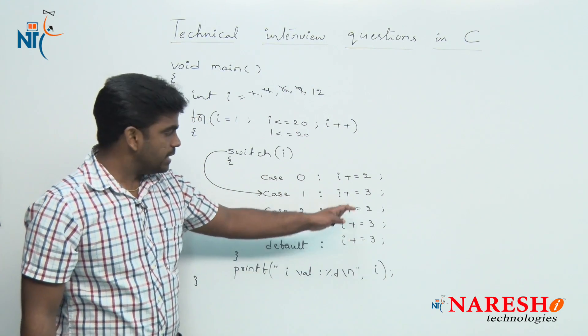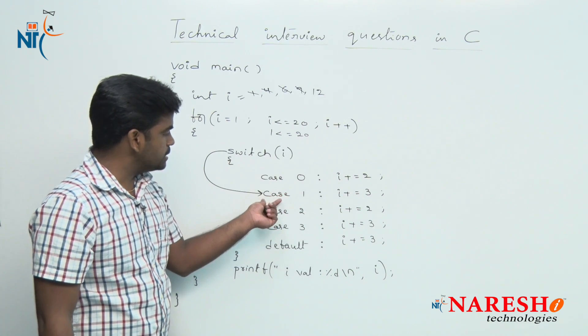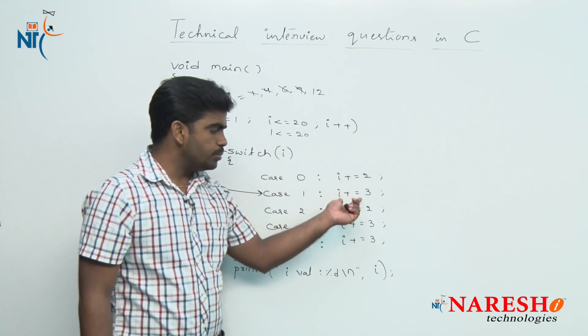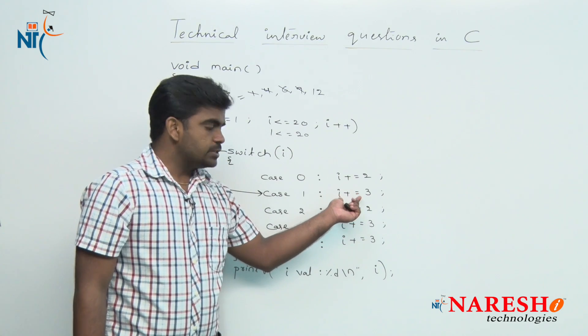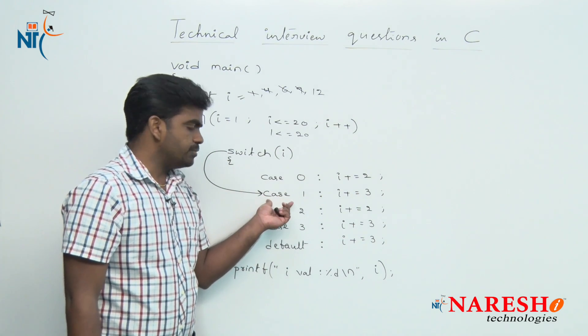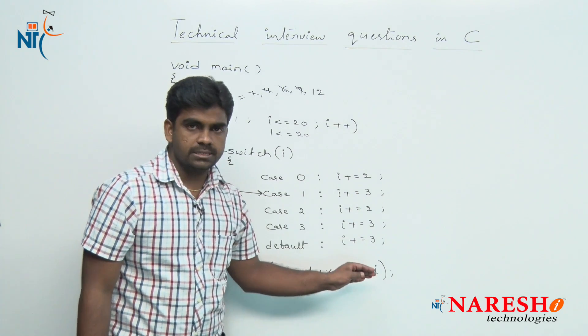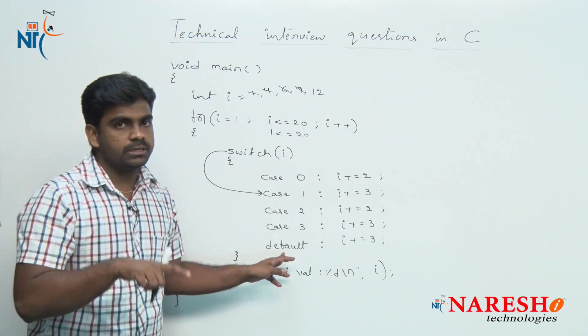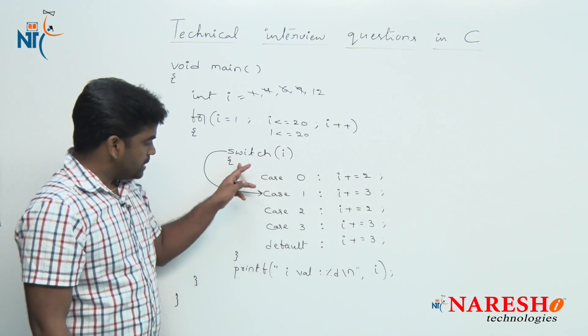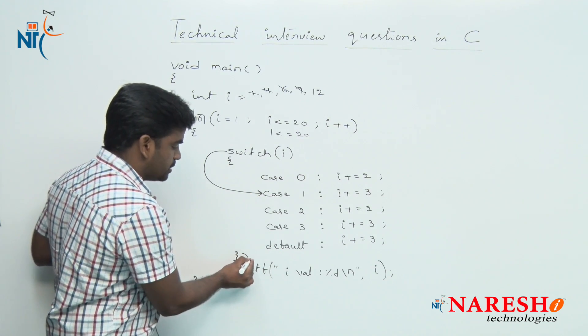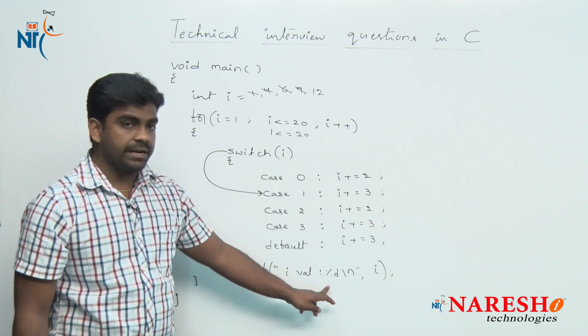Now all the cases execute. Why all the followed cases execute when it's only case 1? Because there is no break statement, so that we need to consider. If there is no break statement after execution of a particular case, all the followed cases execute along with default case also. Once this switch case execution is over, the control comes out of the switch case and it will print that i value.